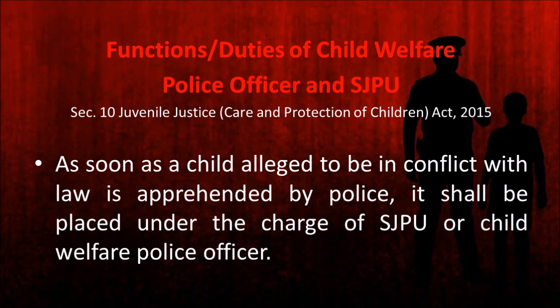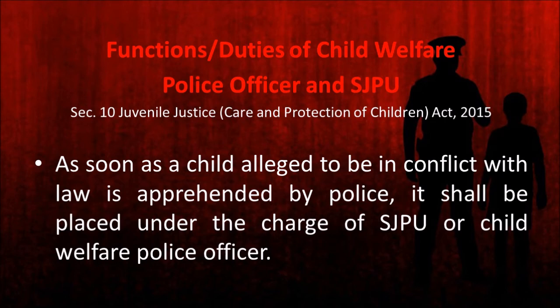The Juvenile Justice Care and Protection of Children Act 2015 establishes two important authorities to tackle juvenile delinquency: child welfare police officers at every police station, and the Special Juvenile Police Unit at district and city level. As soon as a child alleged to be in conflict with law is apprehended by police, the child has to be placed under the charge of either the Special Juvenile Police Unit or the child welfare officer present at every police station.